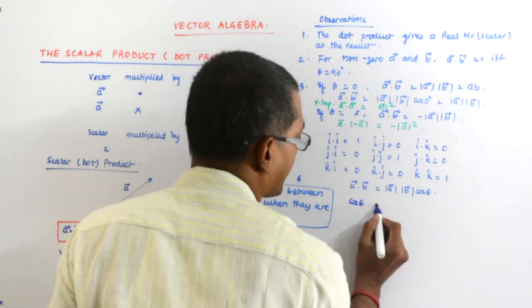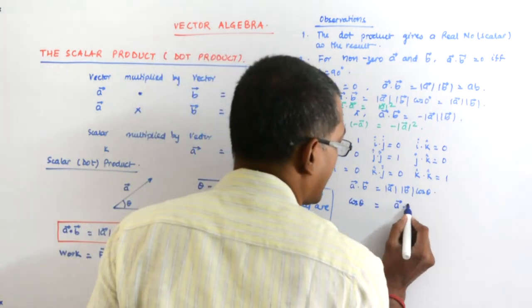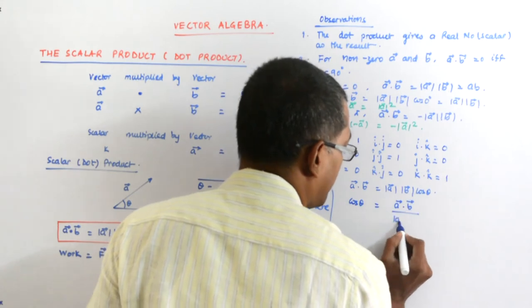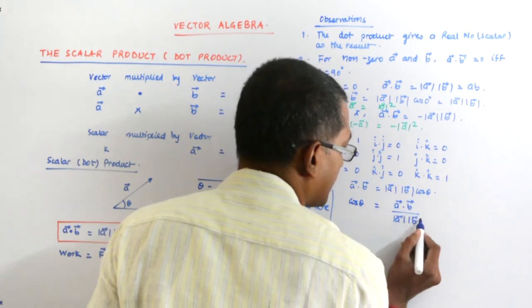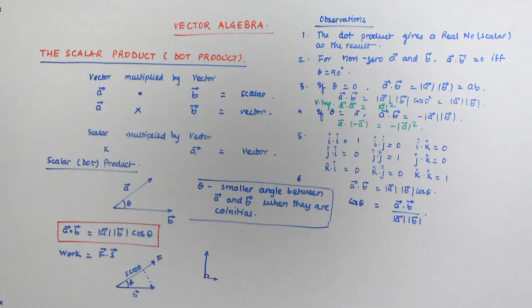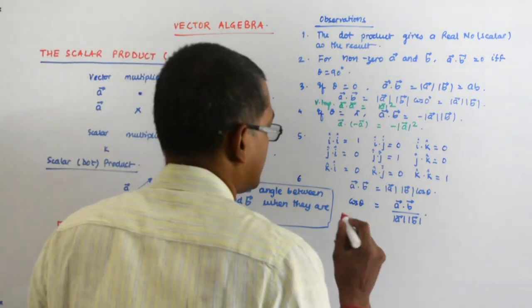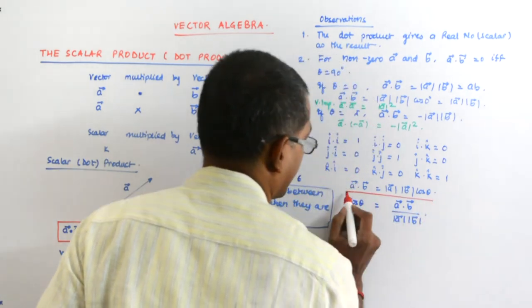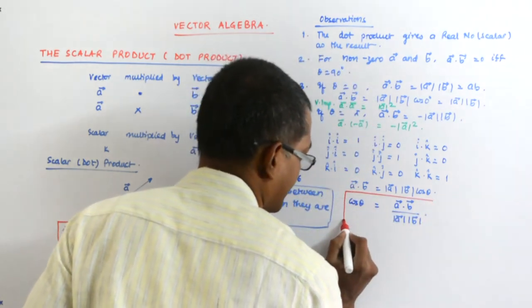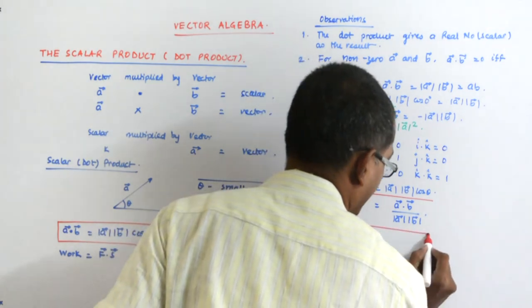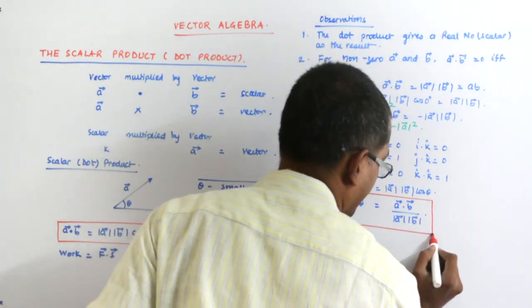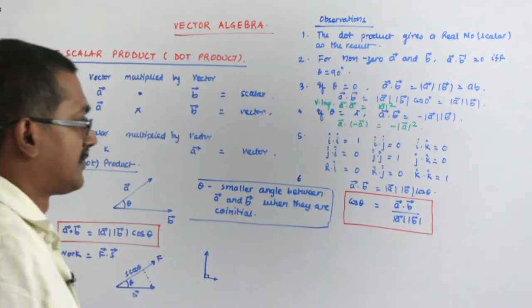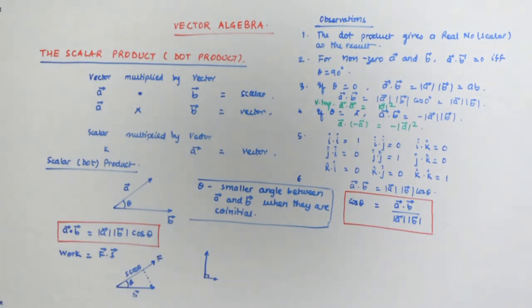So, cos theta is equal to A dot B upon mod A into mod B, okay. So, cos theta is that.